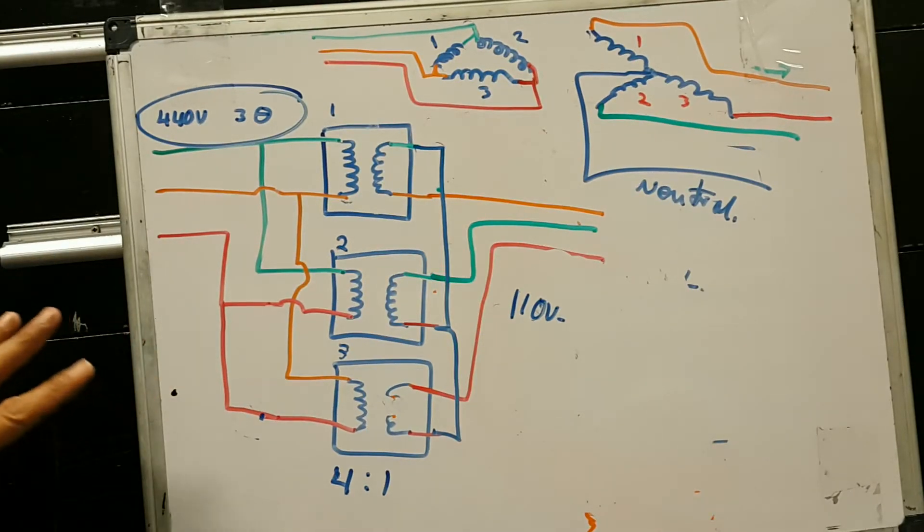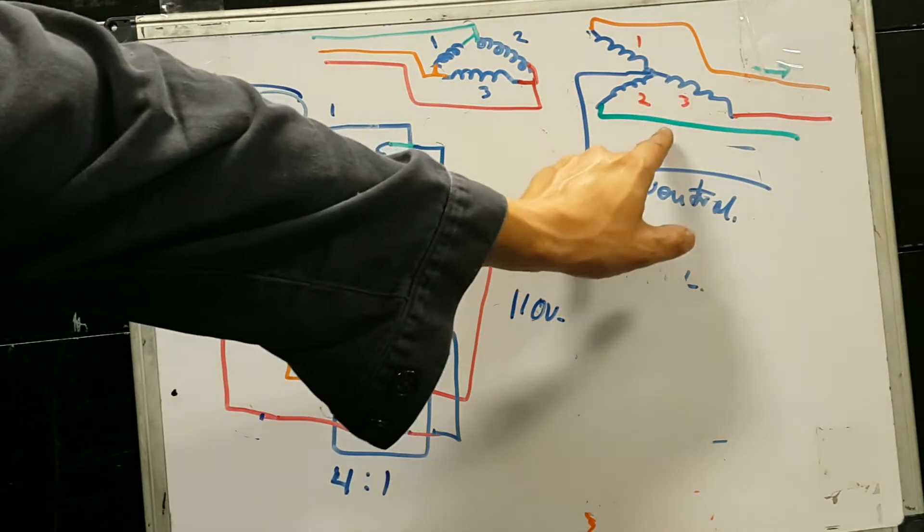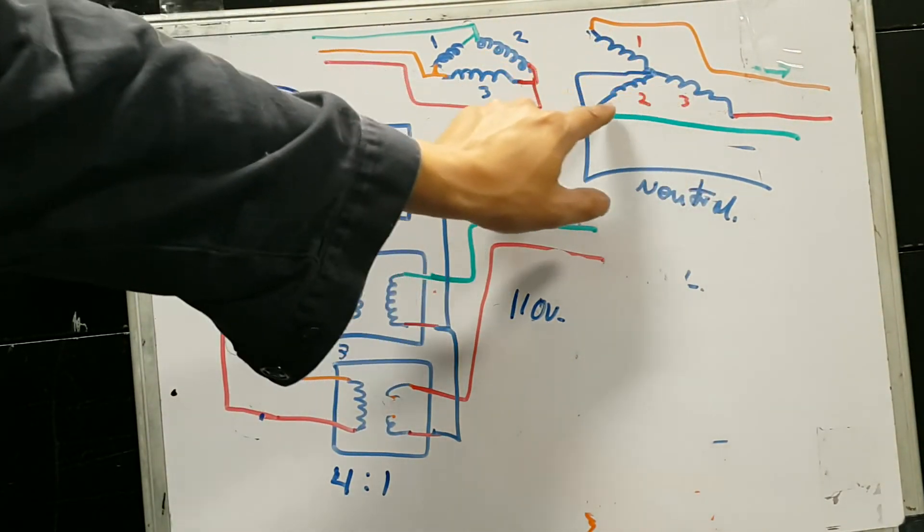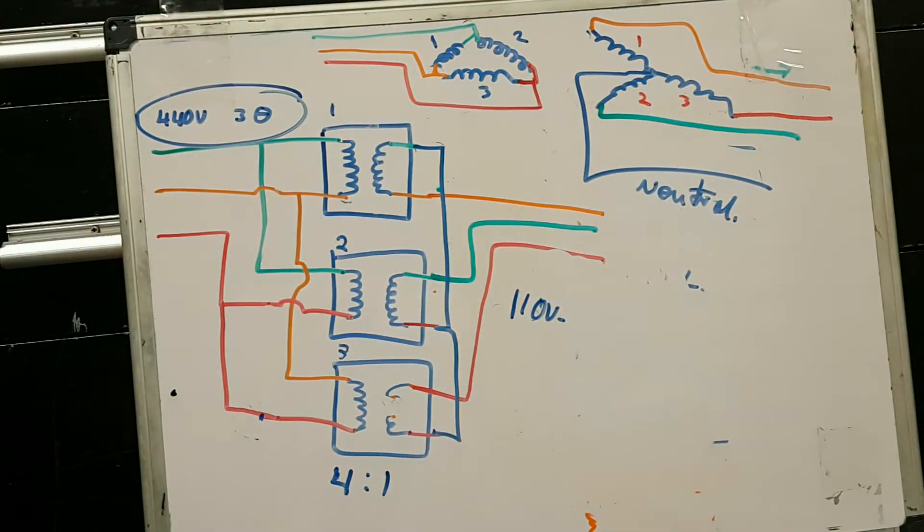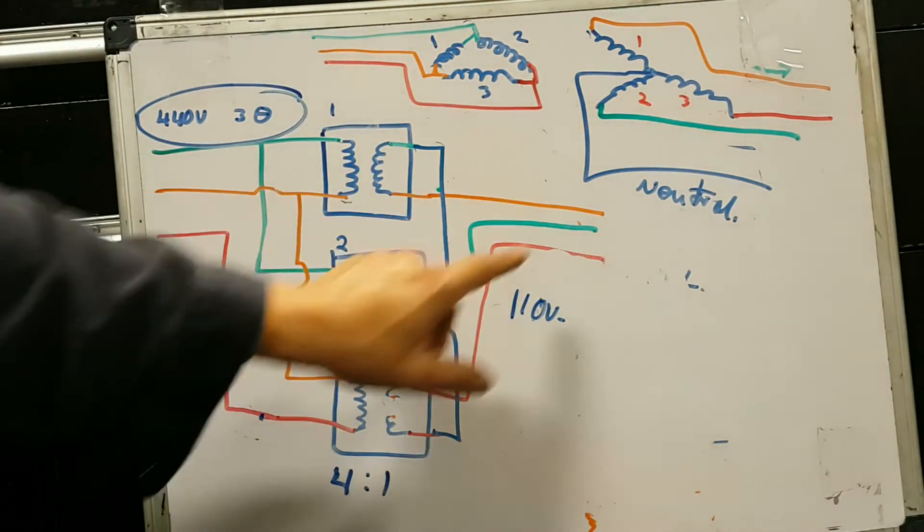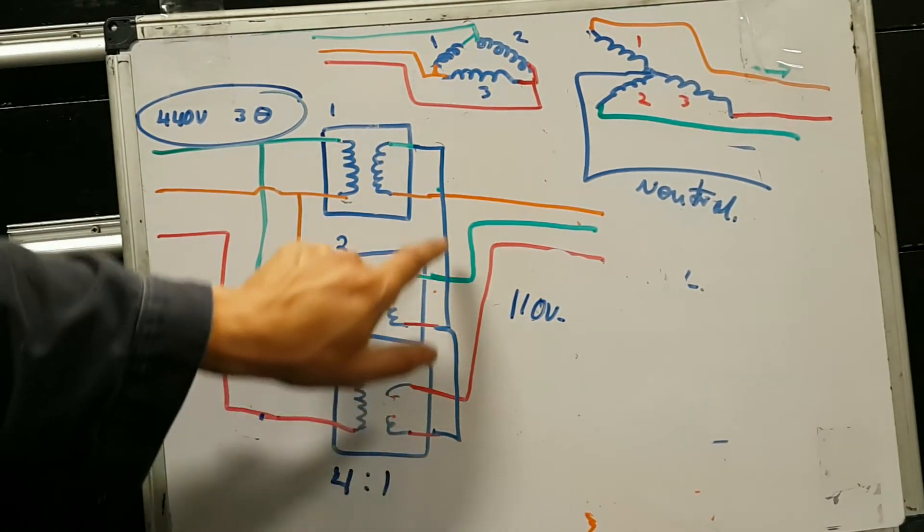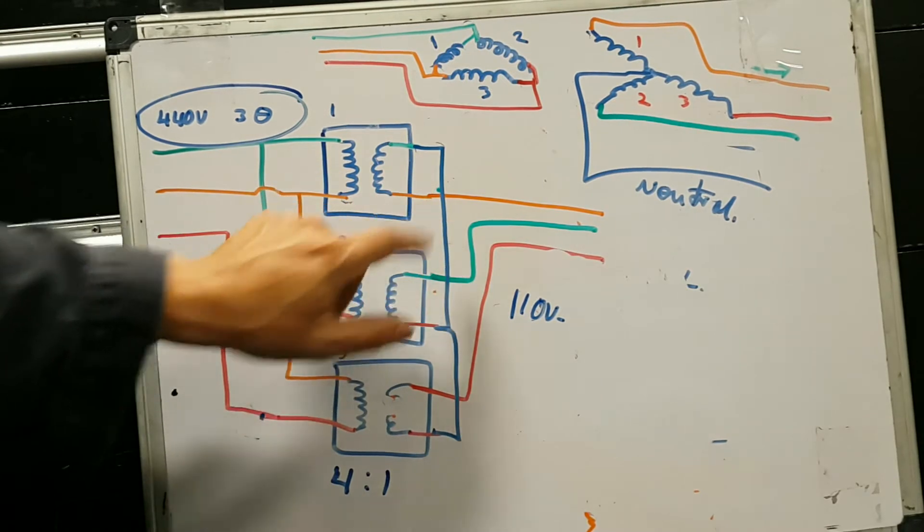I did some changes over here and notice that now my secondary is a Y connection and it looks like a Y over here. Actually, an inverted Y, that's how I drew it.